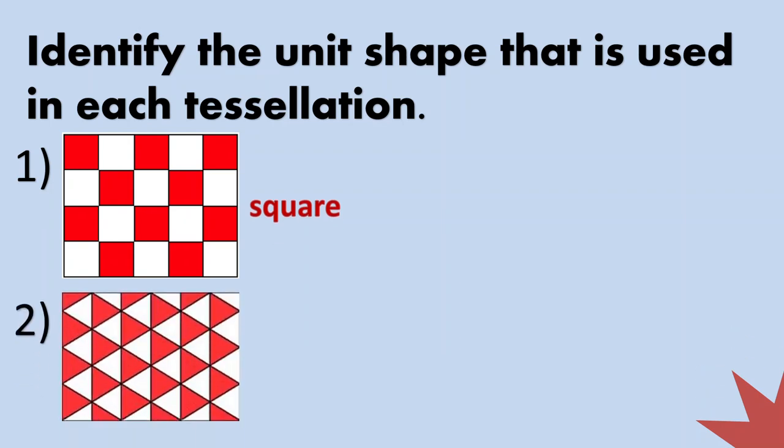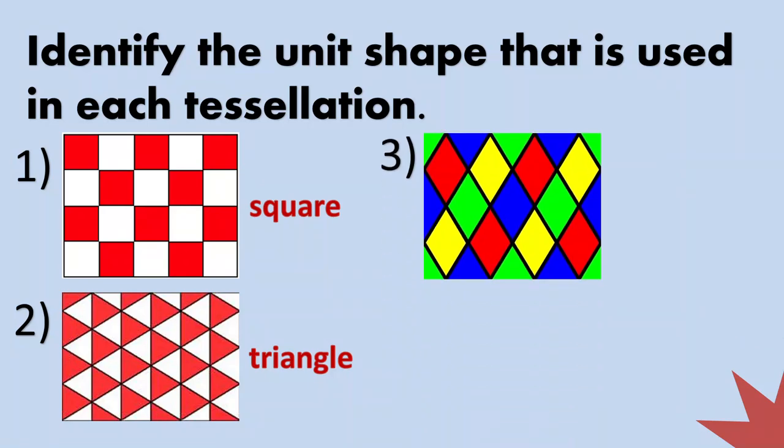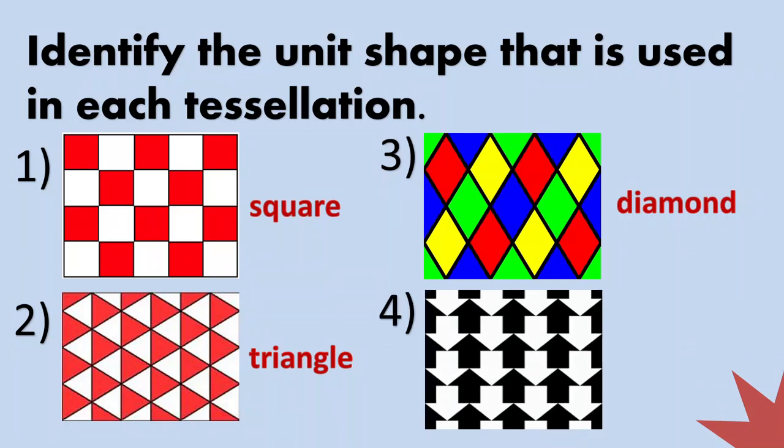Number two. What shape? Yes. It's a triangle. That's the unit shape. Number three. What's the unit shape? It's a diamond. Very good. And number four. Yes. It's the arrow.